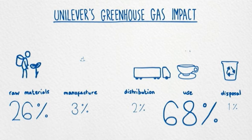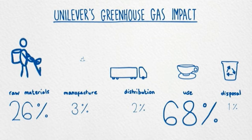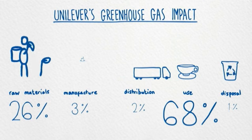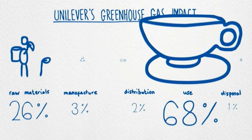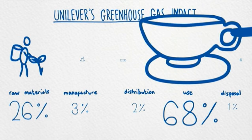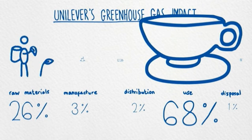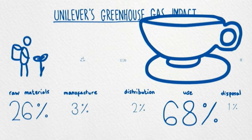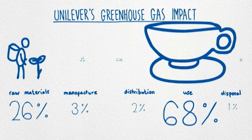Around 26% of our impact comes from suppliers when they produce raw materials, and around 68% comes from the millions of consumers when they enjoy our products. So most of Unilever's impacts aren't our problem, right? Wrong.